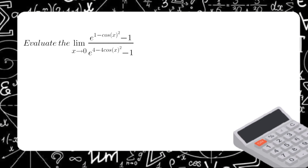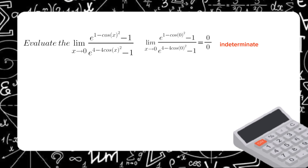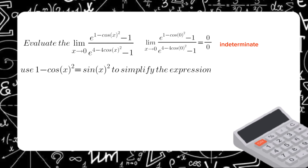Let's proceed to another example: the limit of (e^(1 - cos(x²)) - 1) over a related denominator. We first perform direct substitution with x = 0, and we get 0/0, which is indeterminate. So we can now solve using special limits. First, we use the identity 1 - cos(x²) = sin²(x) to simplify the expression.